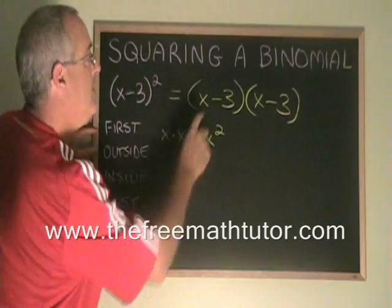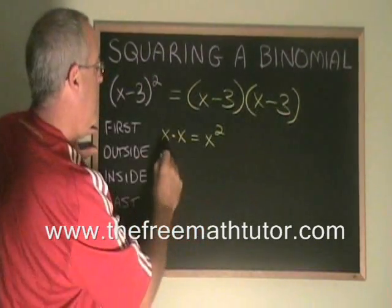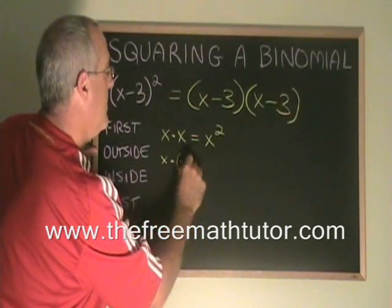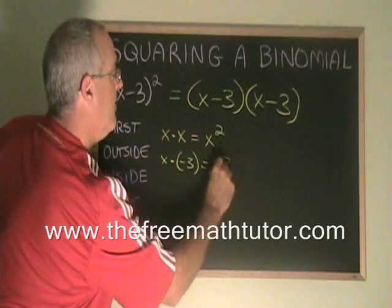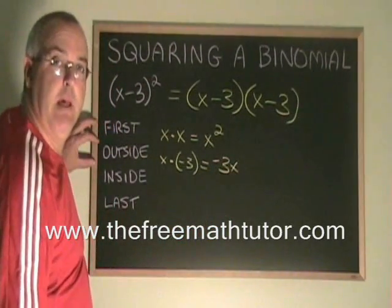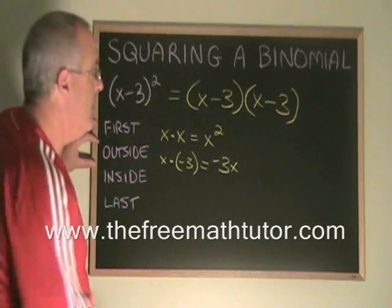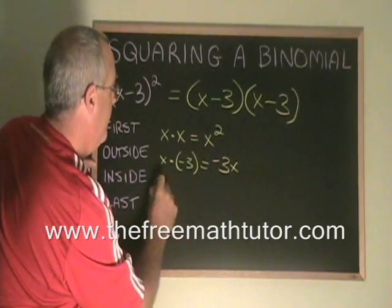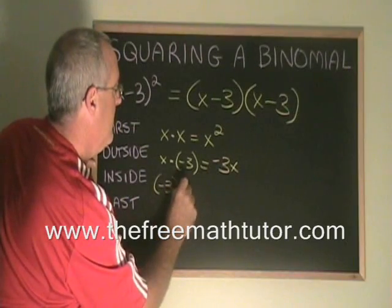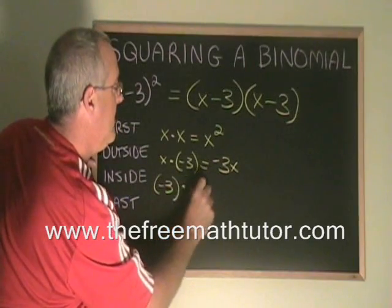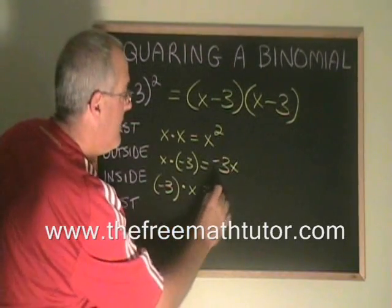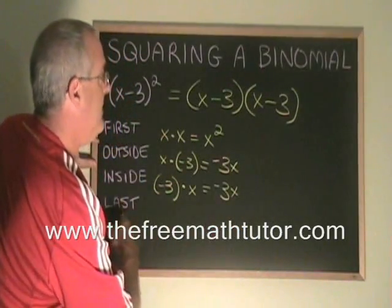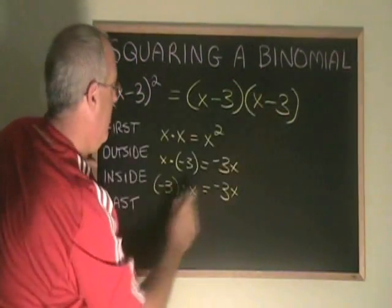The outside terms are the x and the negative 3. x times negative 3 is negative 3x. The inside terms are this negative 3 and this x. Negative 3 times x gives another negative 3x. The last terms are the negative 3 and the negative 3.